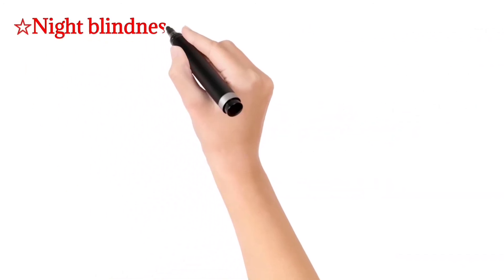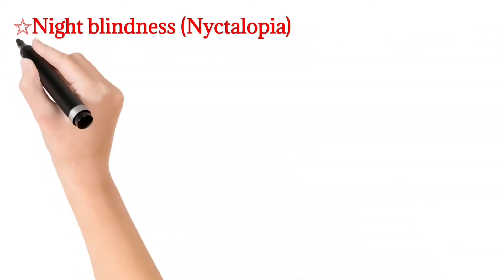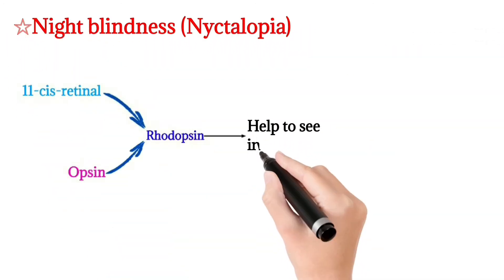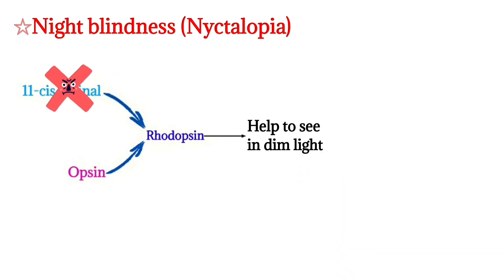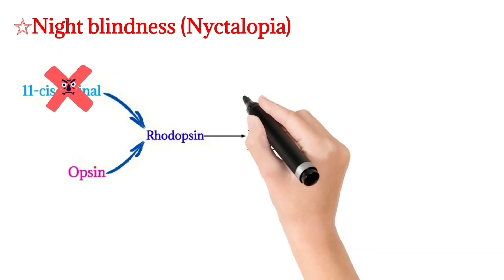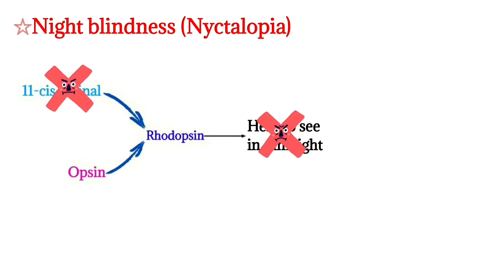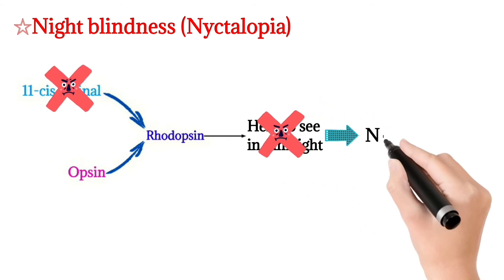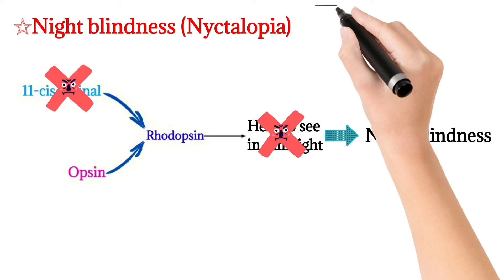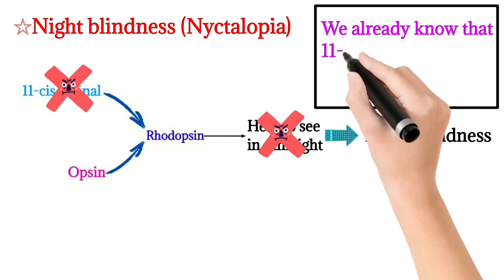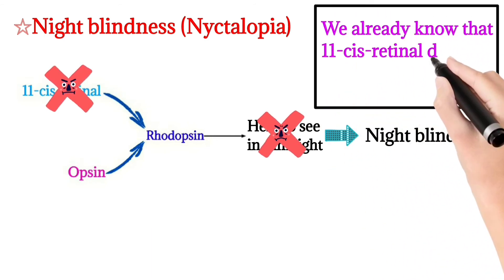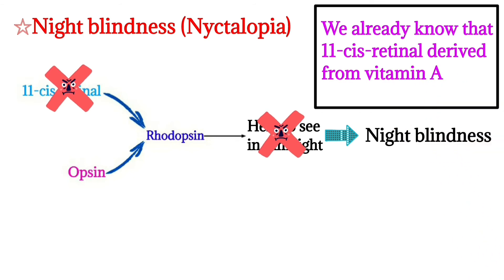Night blindness (nyctalopia): 11-cis retinal and opsin combine to form rhodopsin. If there is a deficiency of Vitamin A, 11-cis retinal does not form and we cannot see in dim light — night blindness will occur. 11-cis retinal is derived from Vitamin A.